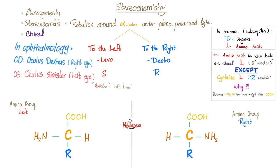So most amino acids in your body are chiral — rotating to the left. We're talking about amino acids here. Therefore, S or R? S. Sinister. Left. Do you have any exceptions? Of course. Cysteine is an exception. Cysteine is rotating to the left; however, it's not S — it's R.